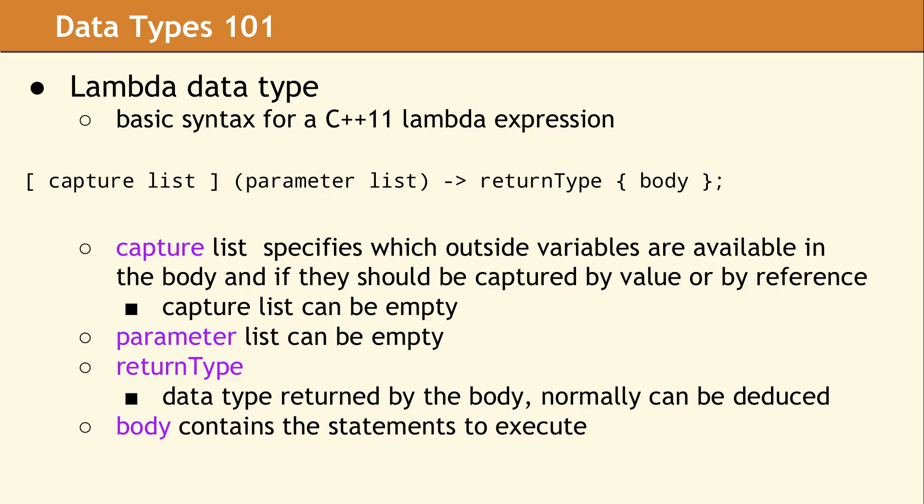The capture list lists the variables from the enclosing scope that should be made available inside the body of the Lambda, and how they should be captured, whether by value or by reference. This capture list can be empty. The parameter list denotes the parameters that will need to be passed to the Lambda later on when it's invoked. This acts exactly like a normal function parameter list, and it can as well be empty. The return type is the data type that the Lambda will return when it is invoked. This normally can be deduced, and the situations in which it can be deduced have gotten more relaxed in later versions of C++. The body is just like the body of any function or method. It contains the list of statements to execute when the Lambda is invoked.